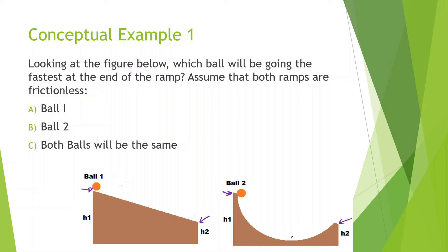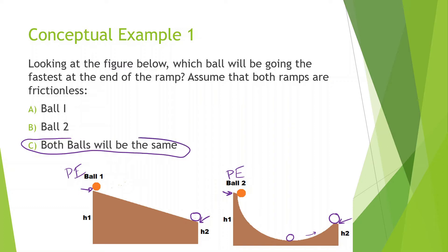Ball 2 will be going fastest mid-path, but it will also start to slow down as it goes up. What we know is they both have the same potential energy at the beginning and the same kinetic energy at the beginning. At the bottom, they're going to have the same amount of energy because they'll also have the same potential energy at the end. So since energy is conserved and they start and end at the same height, they will both have the same speed at the end.